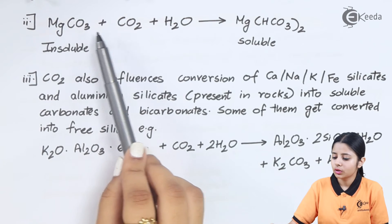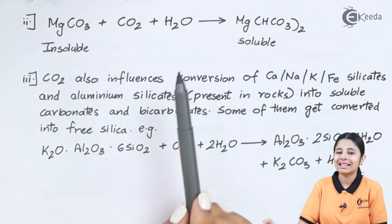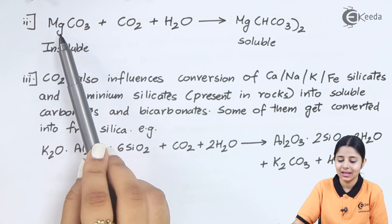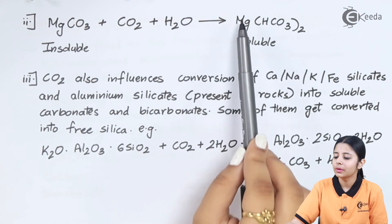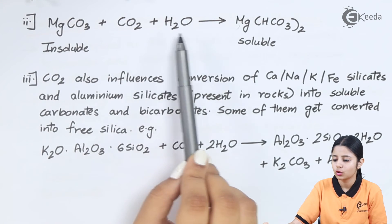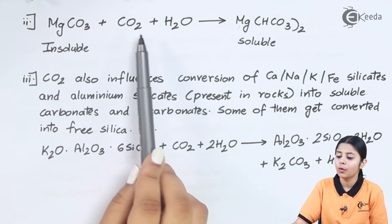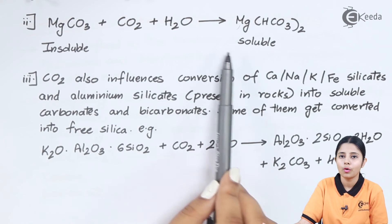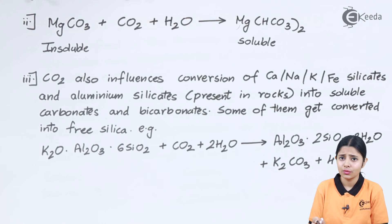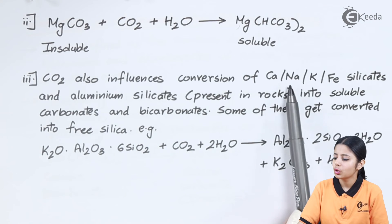Similarly, MgCO3 + CO2 + H2O → Mg(HCO3)2. This reaction is exactly the same as the previous one but with Mg instead of Ca. MgCO3 is insoluble, but with the help of dissolved CO2 in water, a soluble form Mg(HCO3)2 is obtained, converting pure water into hard water.